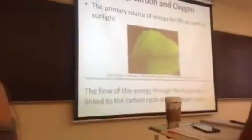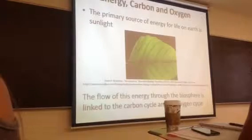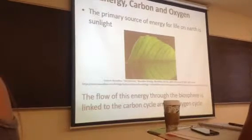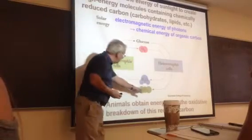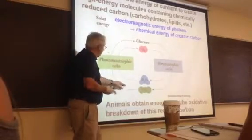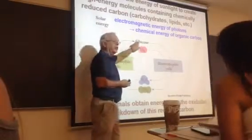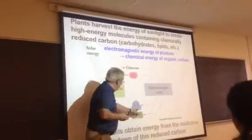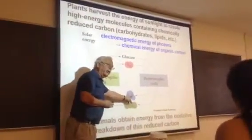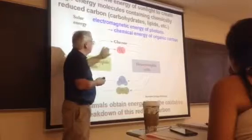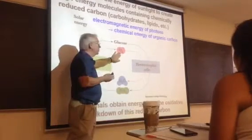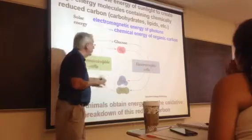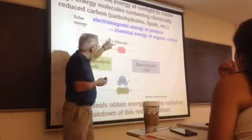It turns out there's a strong link between energy, carbon, and oxygen. Plants use energy from sunlight to do a redox reaction: they take the most oxidized form of carbon, CO2, and turn it into glucose, which is pretty heavily reduced. They do that by getting electrons out of water — they oxidize water and produce oxygen. That's why plants are called oxygenic; they're oxidizing water, stealing electrons off it.